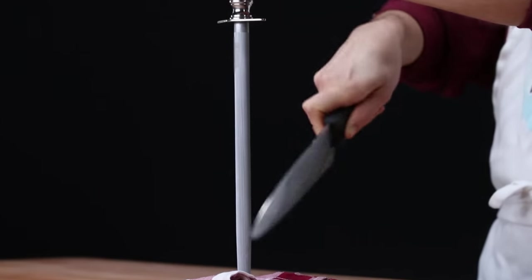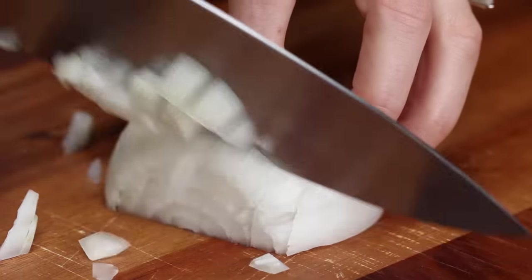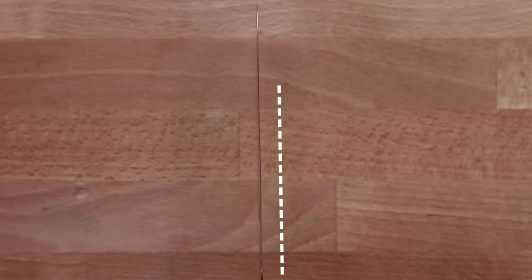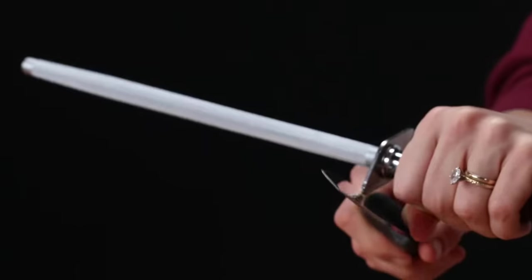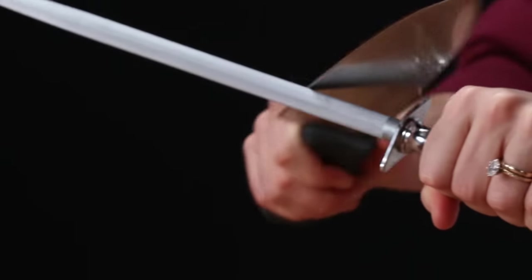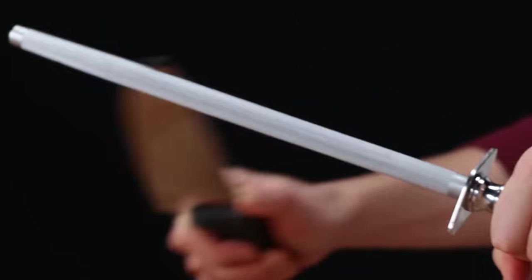Steel is softer than you think it is, so when you're chopping down it's naturally going to bend it a little bit, and so what this is going to do is just kind of straighten it back out again. It's not going to take off any of the steel, it's not going to sharpen it, but it's going to help it be a little bit straighter until you're able to sharpen it again.